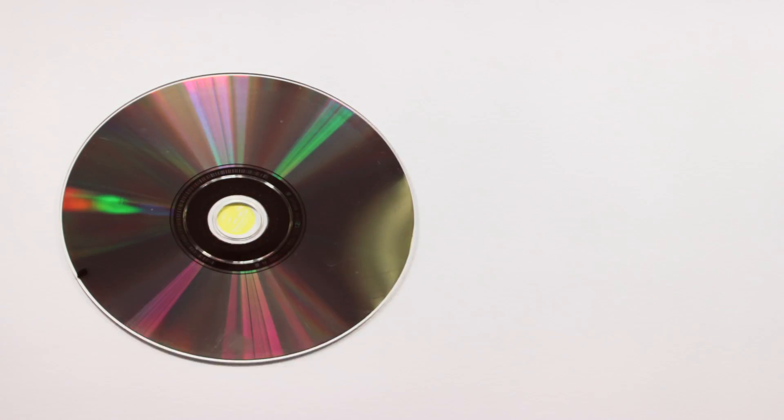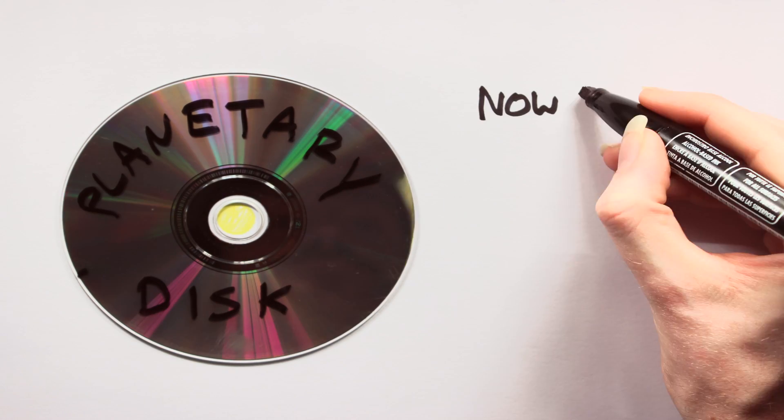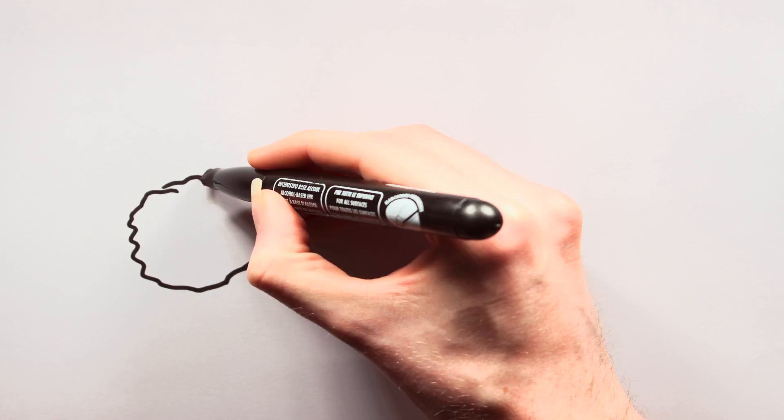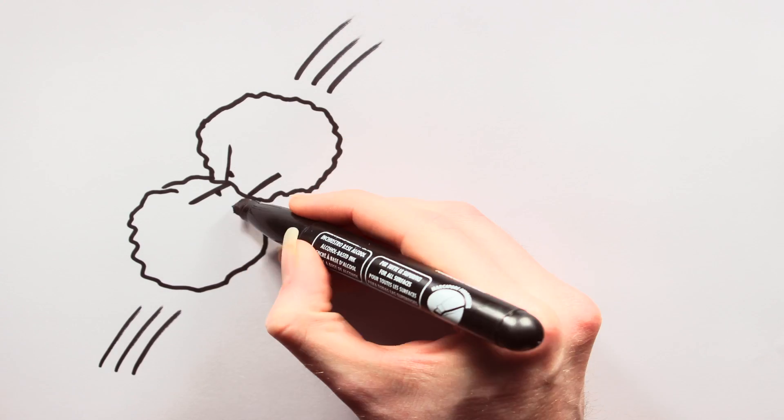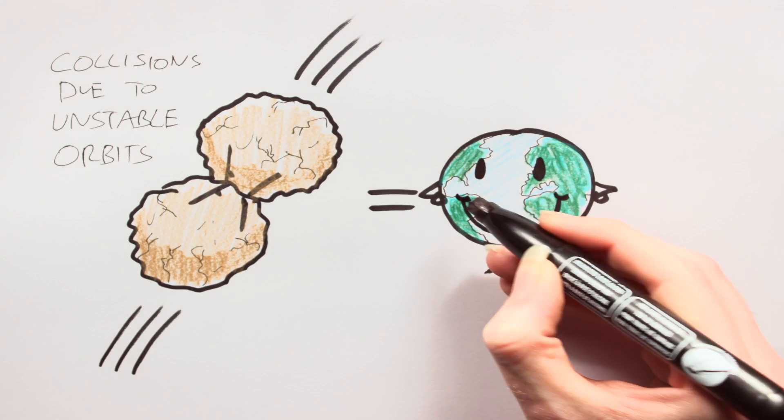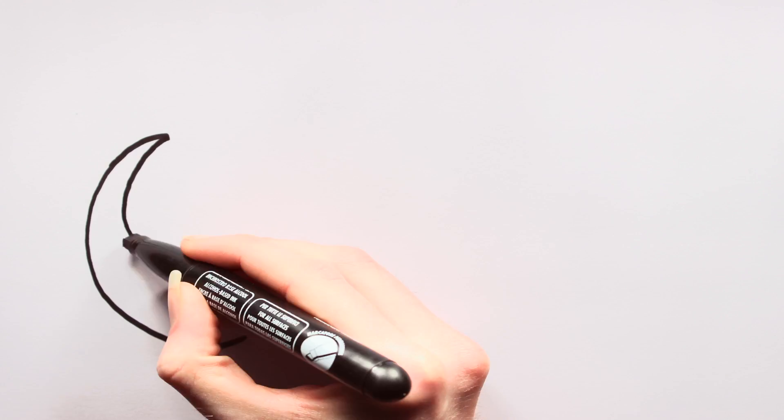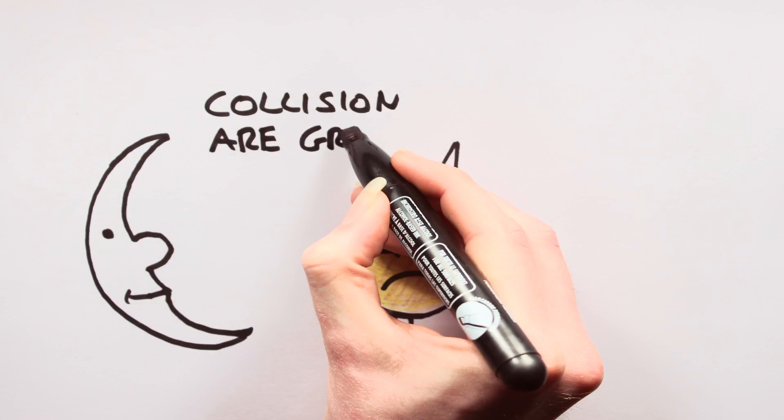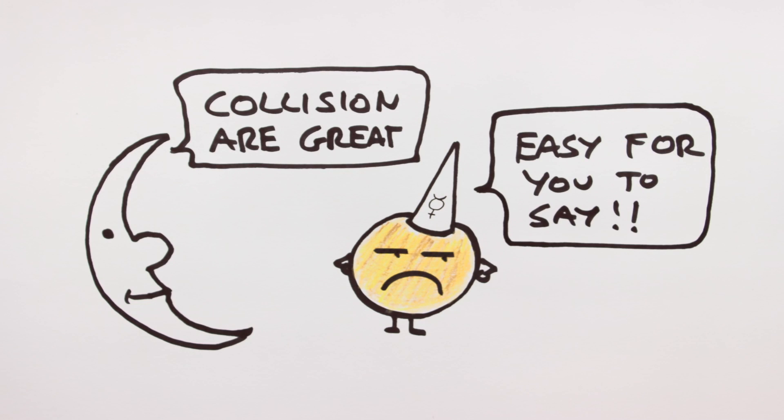Now for reasons unknown to science, the planetary disk is thought to have lost much of its gas at this point, which caused the orbits of these planetary embryos to become unstable. This instability led some of these protoplanets to collide, forming the planets as we know them today. Such collisions are thought to have formed the moon and removed Mercury's atmosphere.